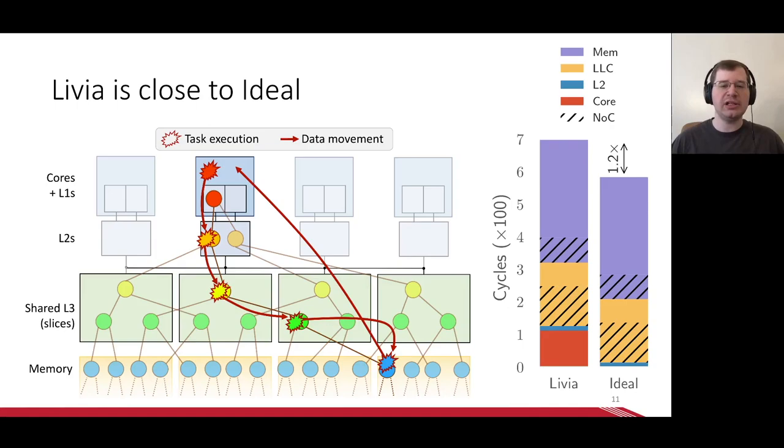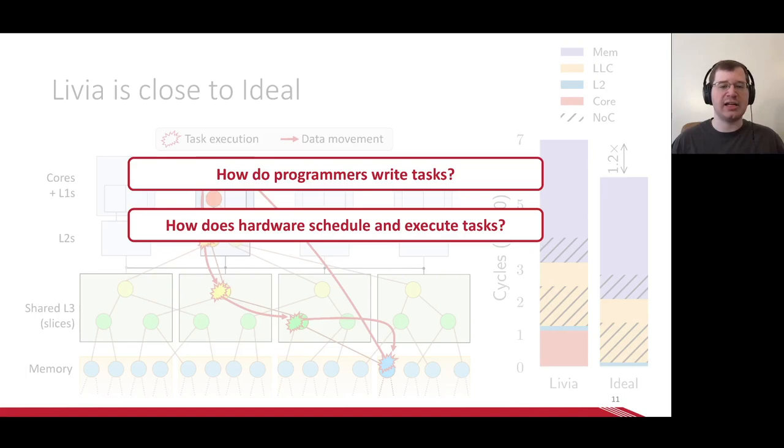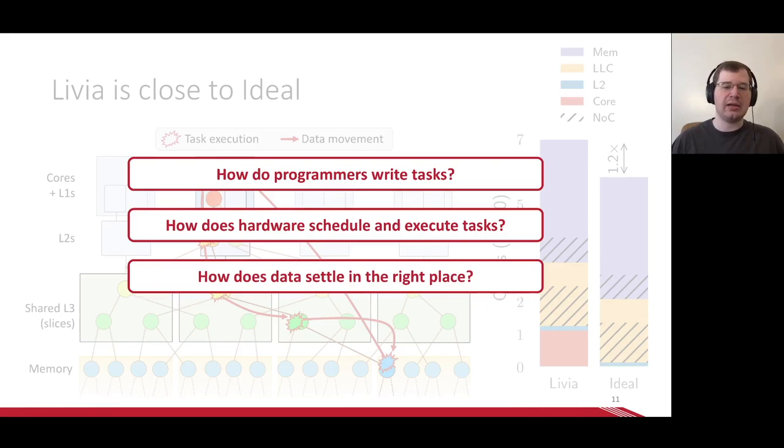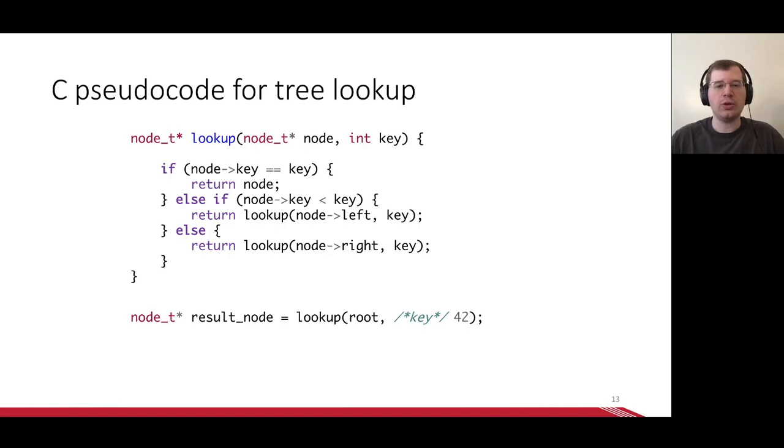Now that we've seen how Livia can migrate execution to data, this introduces three big questions. First, how can we let the programmer write tasks that are associated with data? Second, how do we design an architecture that schedules and executes tasks near data automatically? And third, how does data get into the caches in the first place? Let's start with the first question. How do we let the programmer write tasks that are associated with data? To do this, we introduce an API we call memory services.